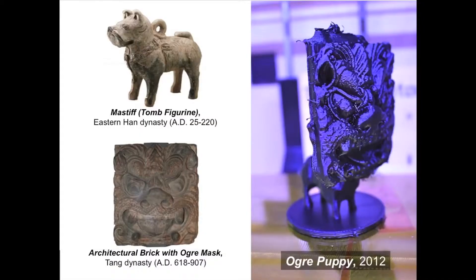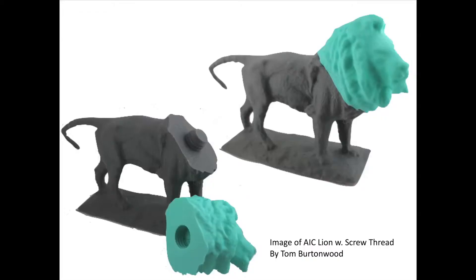And then perhaps the remixing — Tom did this. He took our Mastiff from the Han Dynasty and an Ogre Mask from the Tang Dynasty to make Ogre Puppy, which the kids really love. Tom is actually going to be an artist in residence with us next year. So the scanning makes you look at objects differently, and the remixing turns them into something else. It seemed like there were a lot of engagement points to look at, but it was a little anecdotal, and it felt like time to take it to the next level.